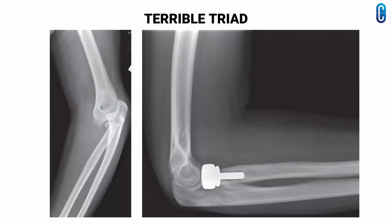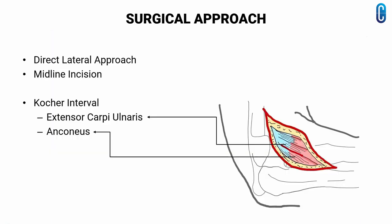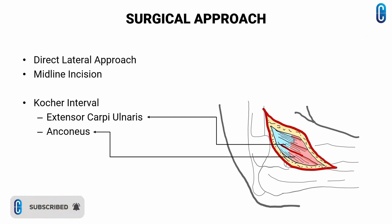This is an X-ray showing a terrible triad injury, and you can see the post-op X-ray showing the radial head which was replaced. The choice of approach depends primarily on the fracture pattern, the type of instability, soft tissue injury, and surgeon experience. A direct lateral approach or a midline incision with subcutaneous flaps to the Kocher interval is usually used. The Kocher interval is the plane between the extensor carpi ulnaris and the anconeus.